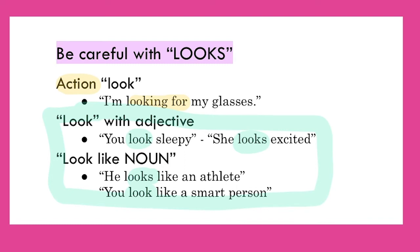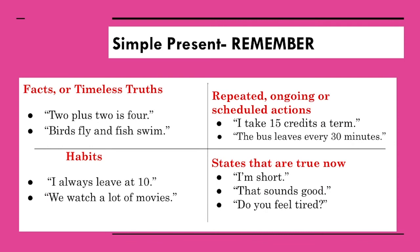So I want you to memorize these four uses of simple present. Simple present does not mean it's happening now. It could be used for facts and timeless truths — remember, science, math, two plus two is four. It could be used for scheduled or repeated actions, like 'I take 15 credits a term' or 'the bus leaves every 30 minutes.' Here's a hint: if you're using simple present for a repeated, ongoing action, there's almost always going to be some kind of time word to tell you what the time period is. Next, habits — and remember there's a clue: we usually use a word like 'always,' or 'sometimes,' 'a lot,' 'usually,' 'all the time.' Those are your clue words that let you know it's a habit.